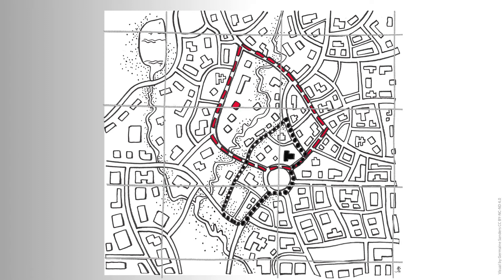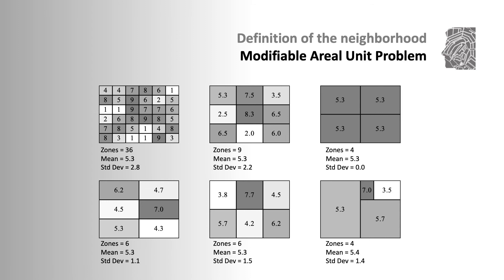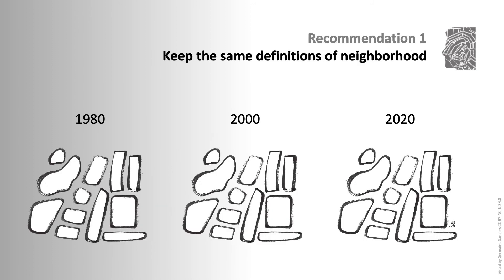Even if you could agree on the size of the neighbourhood, there's still an infinite number of ways to divide a city up. In the literature, this is called the modifiable areal unit problem, or MAUP. This is very important because the results of the calculation of the index of dissimilarity — or indeed any other index — depends on how you define the neighbourhoods in your data. If you increase or decrease the size of the neighbourhood, or you change where the boundaries lie, then the value of your index calculation will also change. So if you want to study changes in segregation over time in a city, it's really important to keep the same definitions of neighbourhood, and to acknowledge that the measure of segregation is only valid for the geography that you've been able to use.